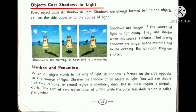Next topic is the objects cast shadows in light. The three things which we need to form a shadow are: First, we need object. Second is the source of light. And third is the surface where the shadow is formed. Every object casts its shadow in the presence of light. Shadows are always formed behind the objects, which means on the opposite side of the source of light.